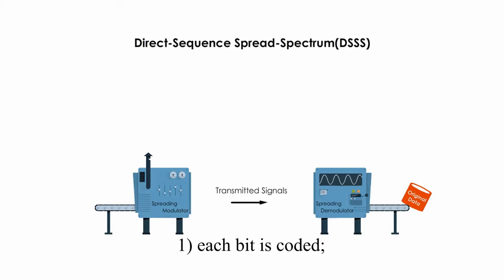One, each bit is coded. Two, signals' bits are distributed over a much wider frequency band.